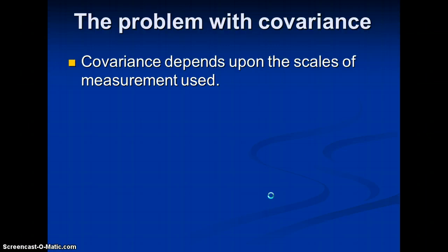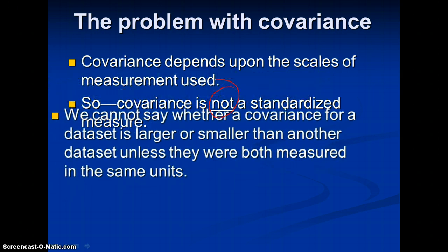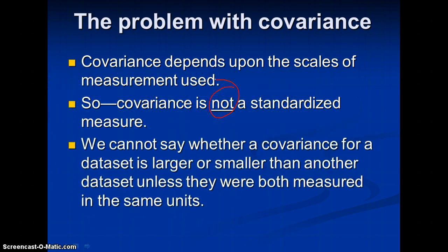Adding those up gives us 56 divided by 6 for a covariance of 9.33. Now, the problem with covariance is that it depends upon the scales of measurement used — covariance is not a standardized measure. We cannot say whether a covariance for one data set is larger or smaller than another unless they were both measured in the same units.